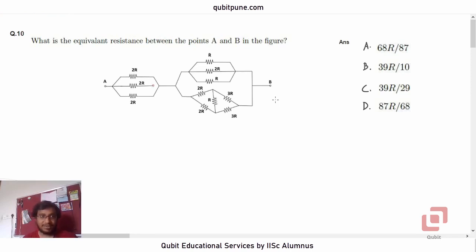The problem reads: what is the equivalent resistance between the points A and B shown in the figure?